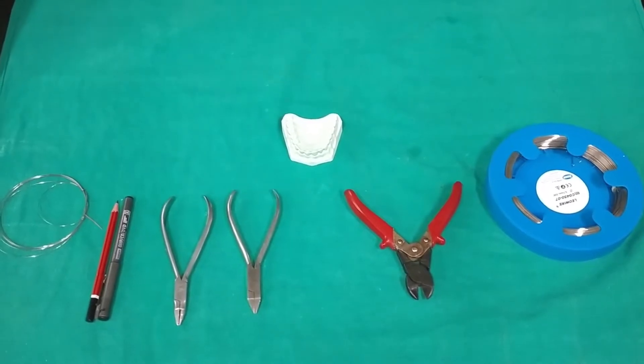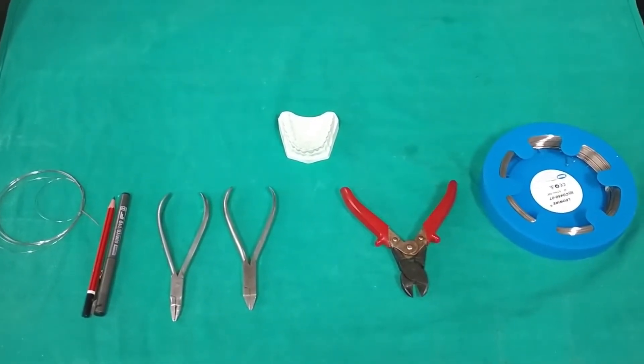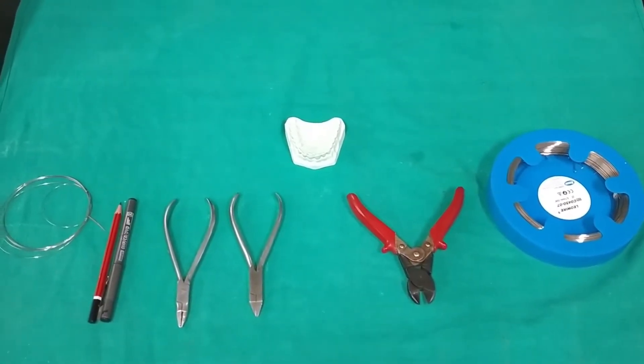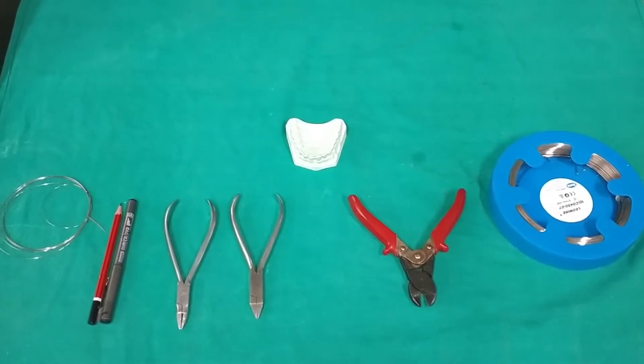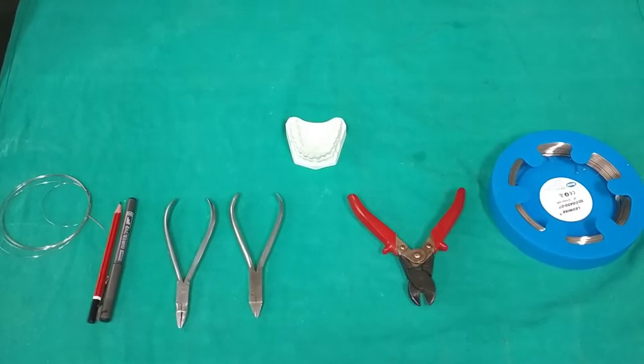For fabrication of Adams clasp, we need 0.7 mm stainless steel wire, Adams plier, hard wire cutter, marker, and working cast.